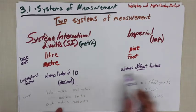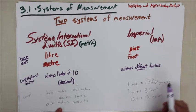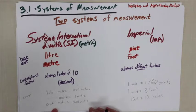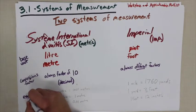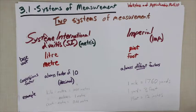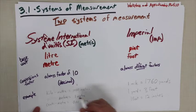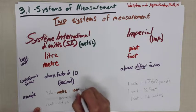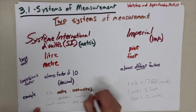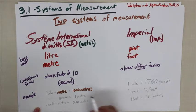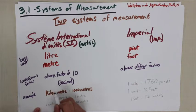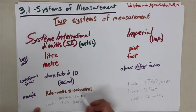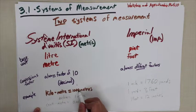The SI system, which is an international standard, always uses the metre for measuring length. When we get to 1000 metres, we use the prefix kilo — a kilometre is the same as 1000 metres. Notice that 1000 is a factor of 10: it's 10 times 10 times 10. The metre is the base unit, equal to one metre.